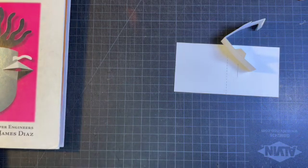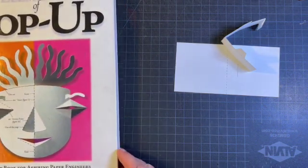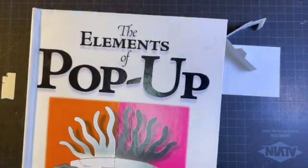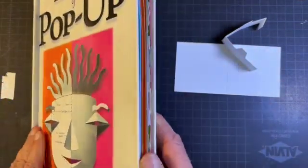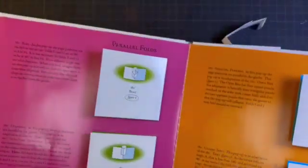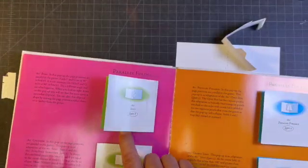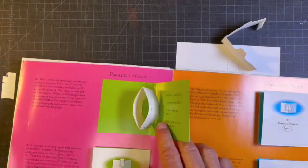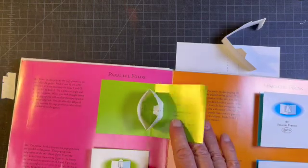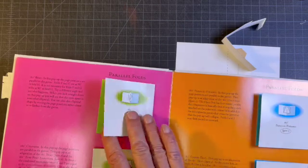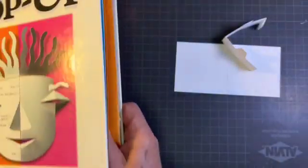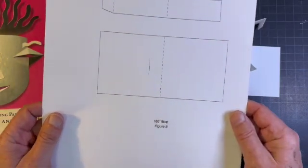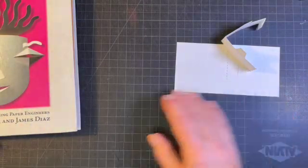Good afternoon everybody, this afternoon we are making the 180 degree boat figure number eight from the Elements of Pop-up book. There's the book, this is the pop-up we're making, the 180 degree boat. It's basically just a dimensional ellipse, elliptical shape. This is the pattern that I downloaded from popupbooks.com and this is the pop-up piece.